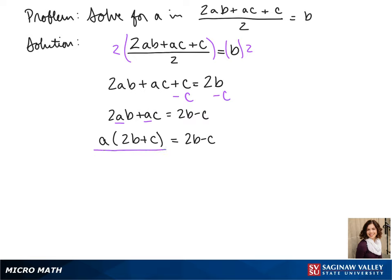To get A by itself, we divide both sides by 2B plus C, and we get A equals 2B minus C over 2B plus C.